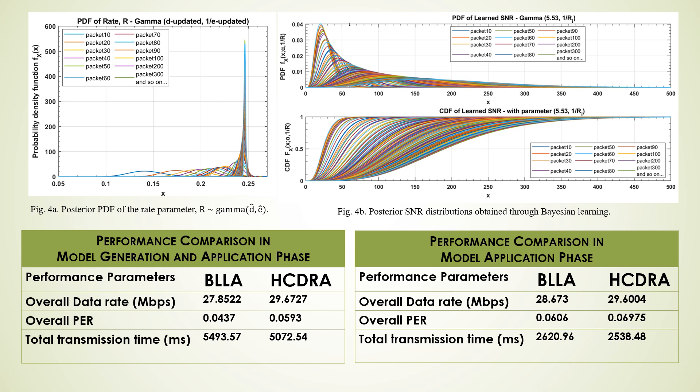Next, we do a performance comparison of our proposed algorithm — Bayesian learning based link adaptation (BLLA) — and our earlier proposed algorithm, hybrid channel-dependent rate adaptation, which in short we define as HCDRA. HCDRA solely depends upon the channel state information feedback. In our algorithm BLLA, there are two phases: the model generation phase and the model application phase.